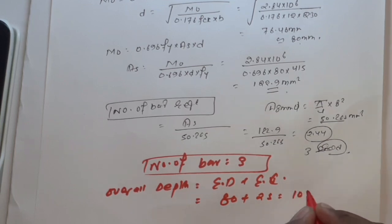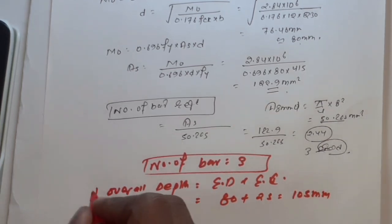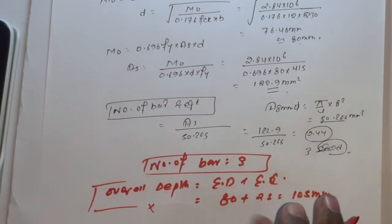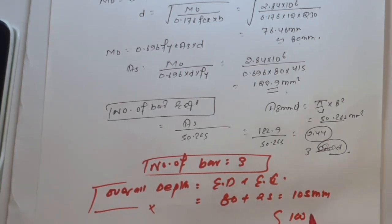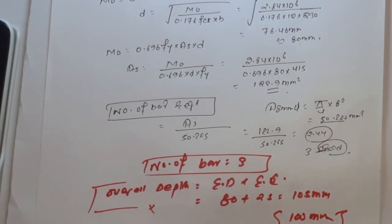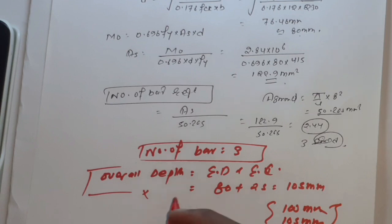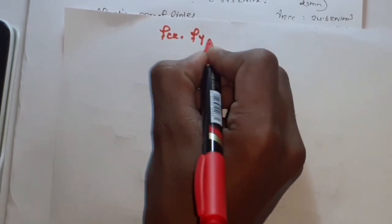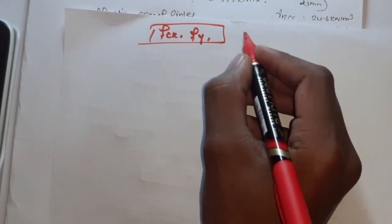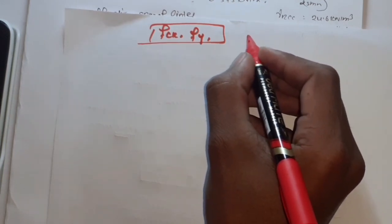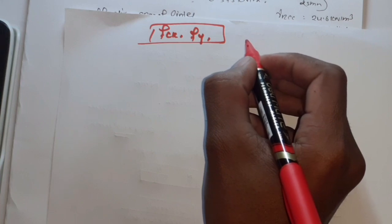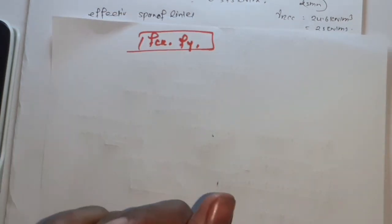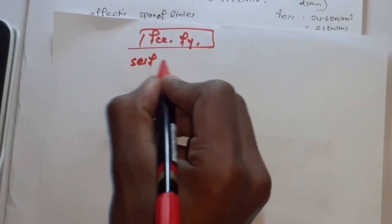The effective cover is 25 mm, and the overall depth of the lintel is 100 mm. This gives an actual effective depth of 100 minus 25 equals 75 mm. The lintel design is for the first question. The given data includes: fy is the yield strength, wall thickness, and we now proceed to finalize the lintel dimensions.